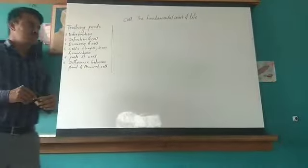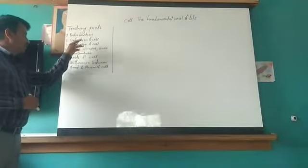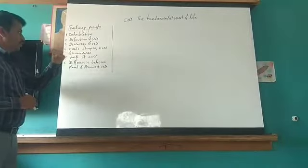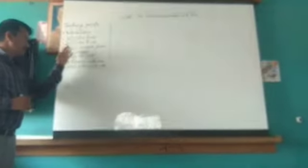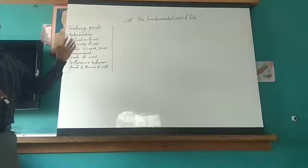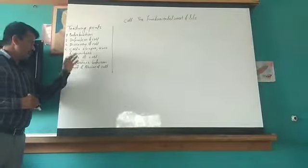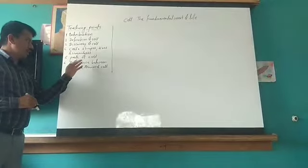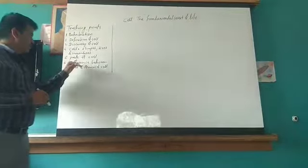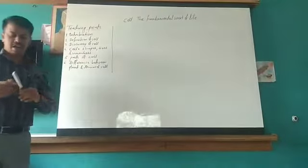In this chapter, today we will start from the introduction, then the definition of the cell, discovery of the cell, the cell shapes, their sizes, their numbers, and after that the parts of the cell. On the basis of that, we will also discuss the difference between plants and animals.